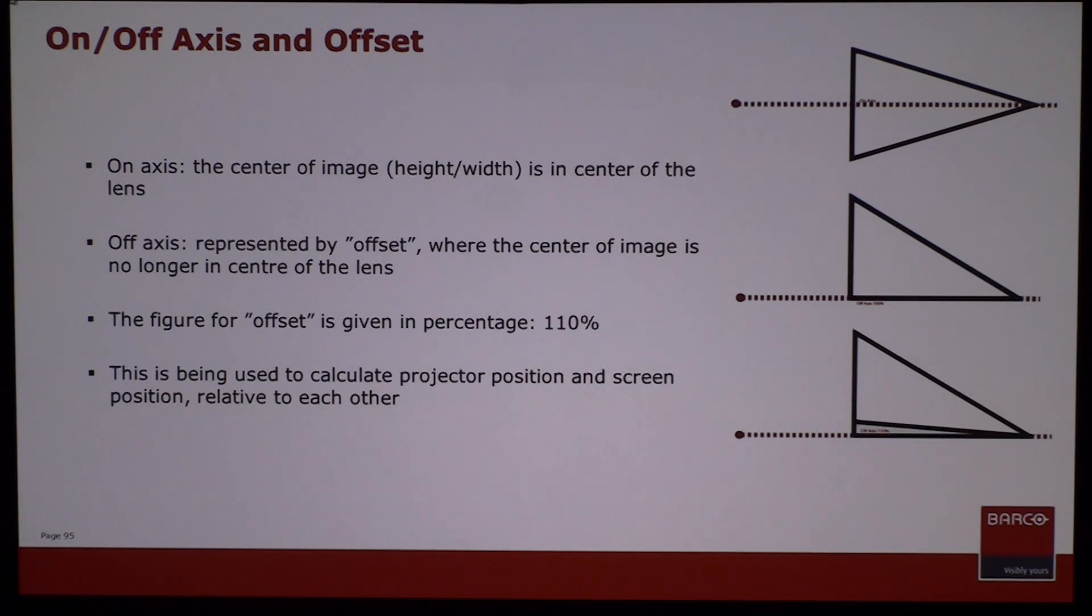For instance, if I had an image that's 100 inches tall and I know that my lens shift range gives me 110 percent flexibility, I can position the lens of the projector to be 10 inches above or below that 100 inch image